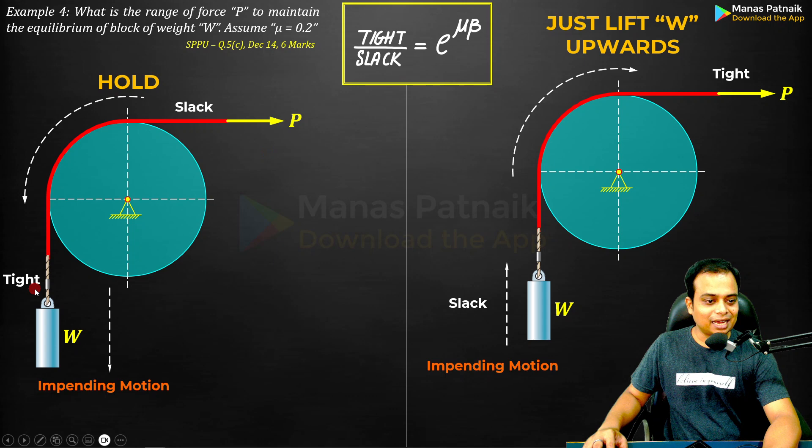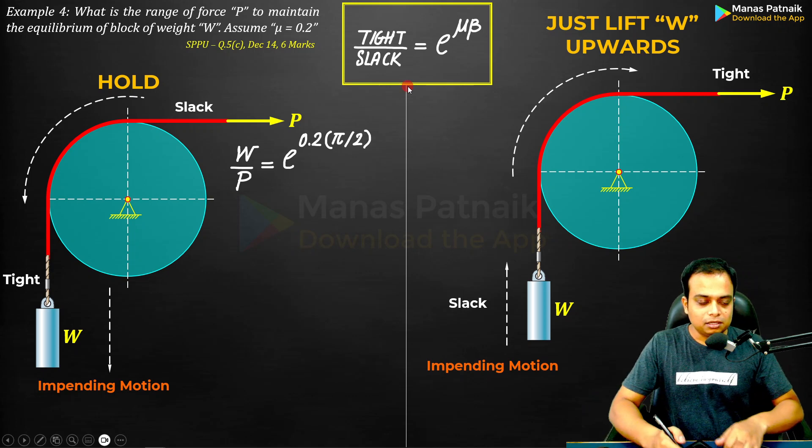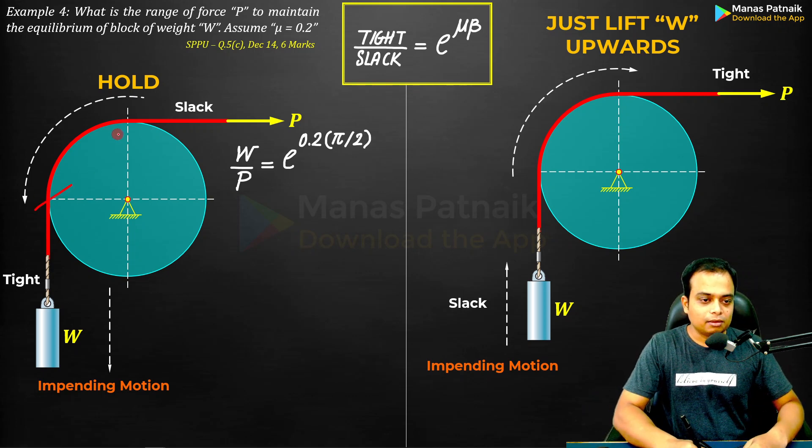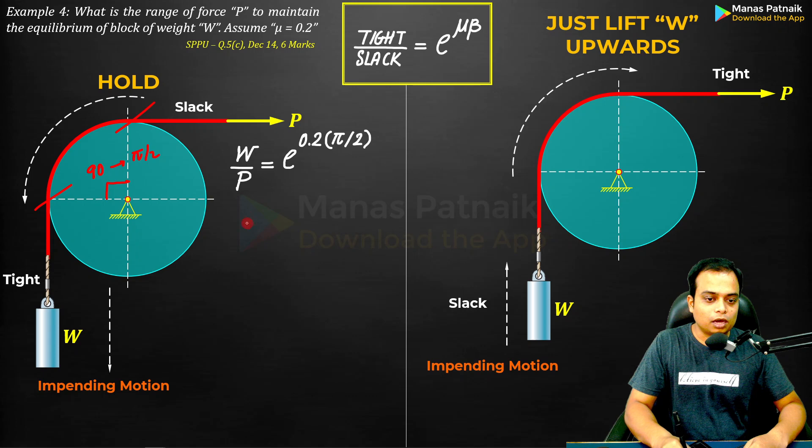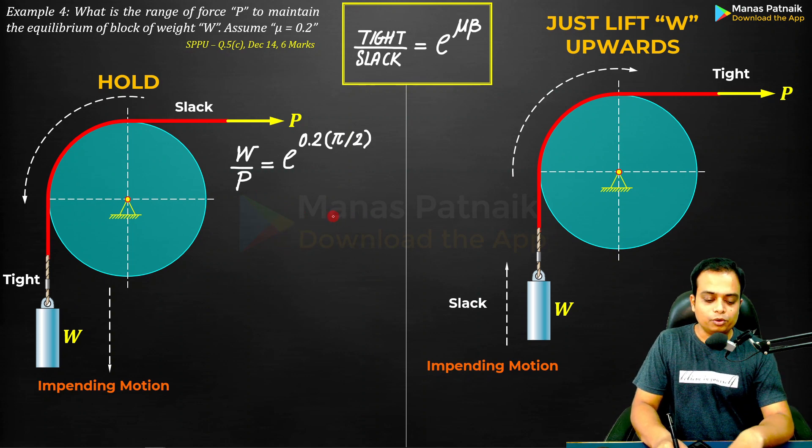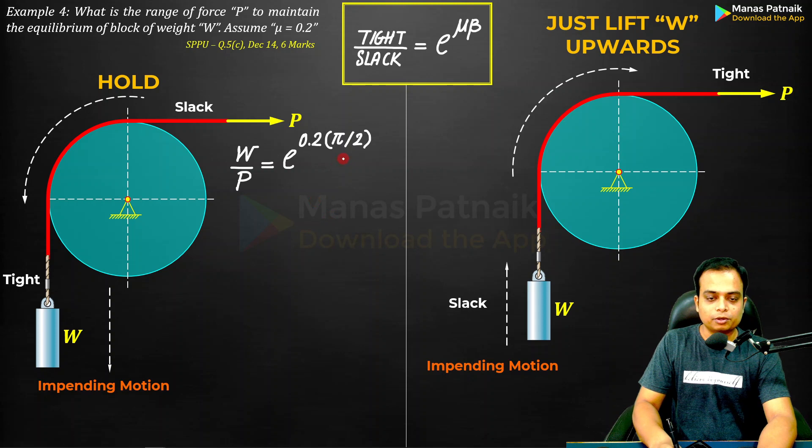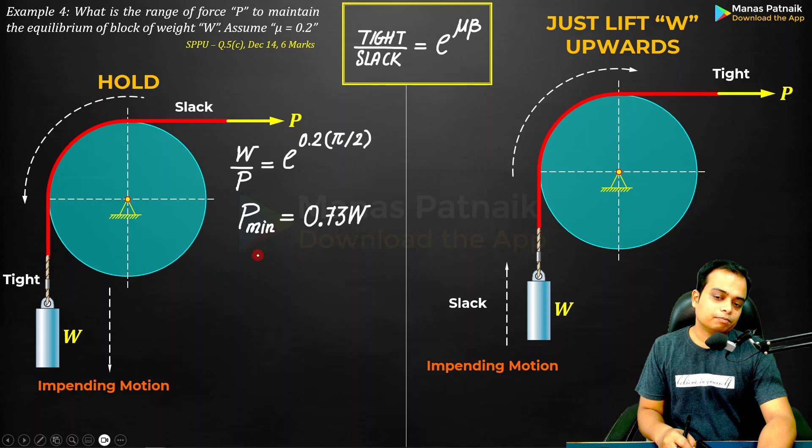For this hold case, tight by slack, W over P equals E raised to the power mu beta. You can clearly see that this is where the angle begins and here the angle ends. 90 degrees in radians can be written as pi by 2. 90 multiplied by pi by 180, when you do the math, is equal to pi over 2. All of you know this stuff. That's why I placed it over here. Solve for P, you're going to get the minimum value.